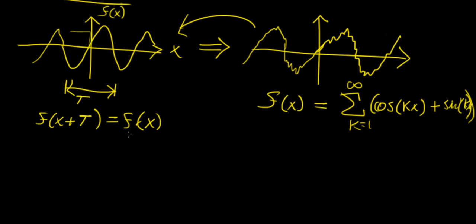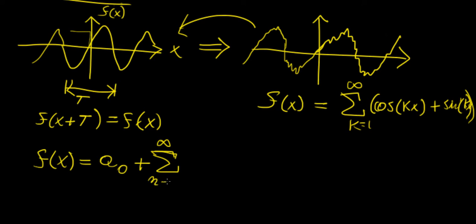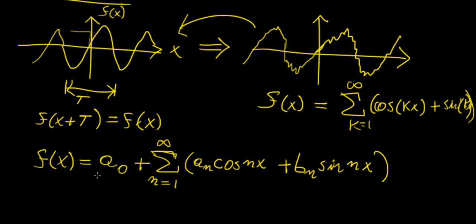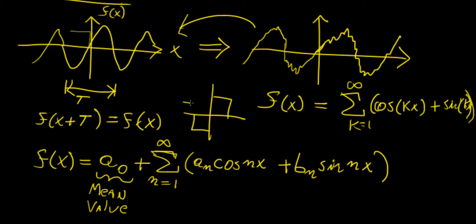In general, the Fourier series is defined as follows. We can represent a function f(x) as a sum: one term called a₀, plus an infinite sum of trigonometric functions from n = 1 to infinity of aₙ cos(nx) plus bₙ sin(nx). Each of these coefficients needs to be determined using a different integral — these are called Fourier coefficients. The first one, a₀, represents the average value or mean value of the function within the interval in question.